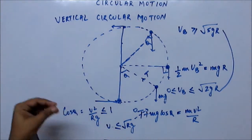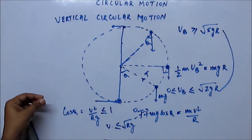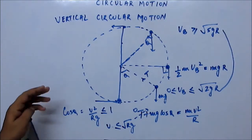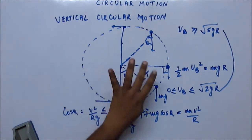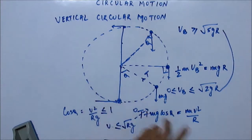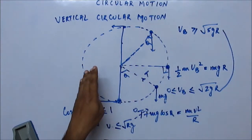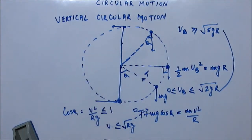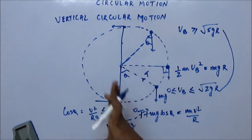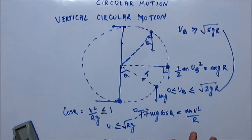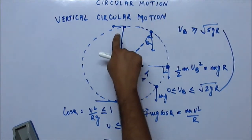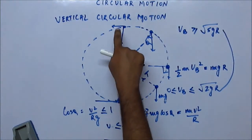So what happens in that case? If tension becomes 0, the bob is no longer attached to the string, so it will come out of the circular path and there will be no oscillation — the bob leaves the circular path entirely.